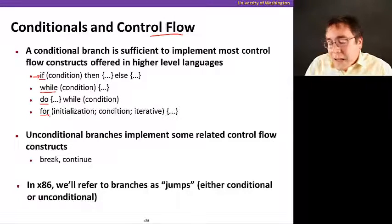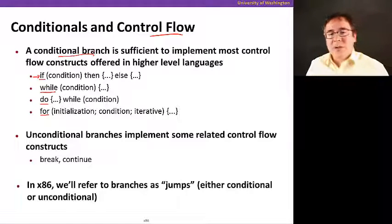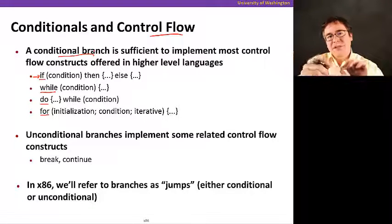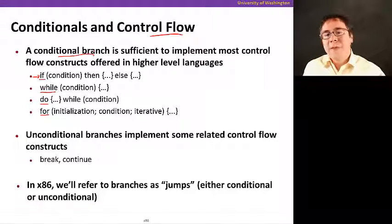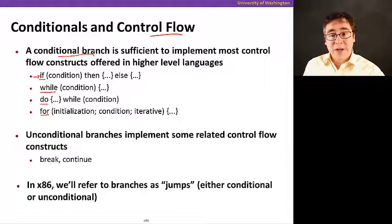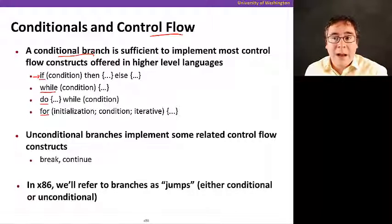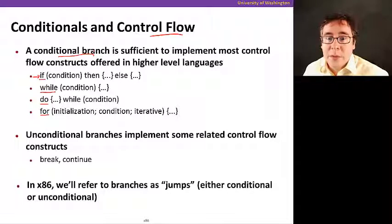A conditional branch instruction, where a branch is an instruction that changes the control flow, and if you make the control flow conditional, which makes it a conditional branch, it turns out that that instruction is sufficient to implement most of the control flow constructs offered in high-level languages like the ones I just told you about.